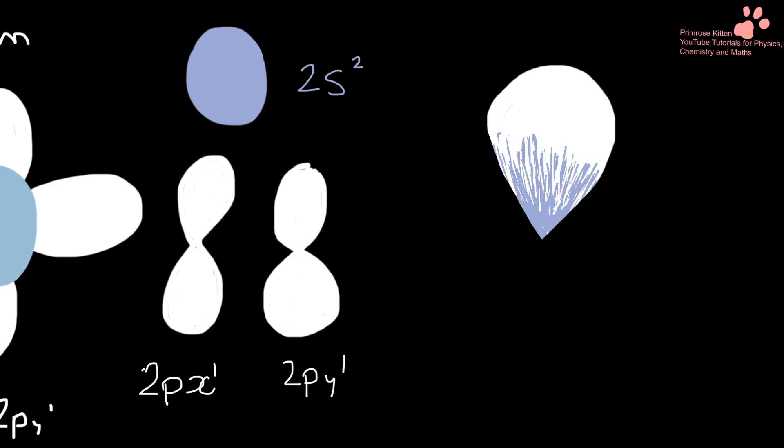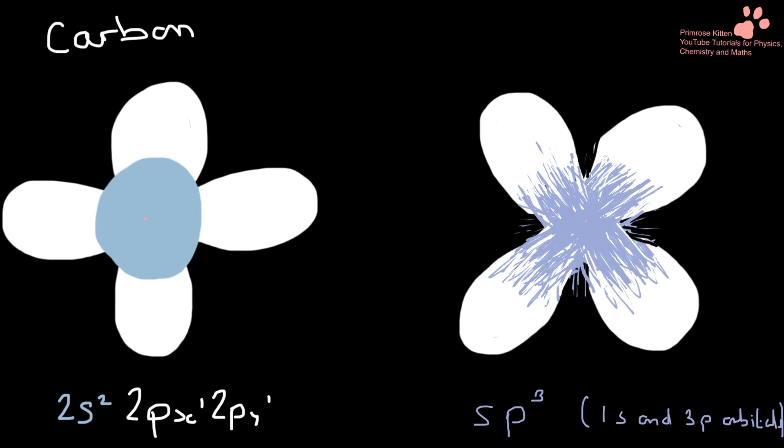We get an sp3 orbital and there are four of these sp3 orbitals surrounding, in this case, each carbon. So instead of getting a sphere and two dumbbells surrounding each carbon, we have these four identical hybridisation orbitals, the sp3 orbitals.